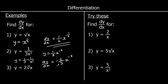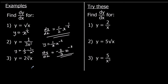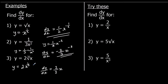For the third one, we've got two times the cube root of x. The cube root of x is the same as a power of one third, so we can say y equals two x to the power of one third. A power of a half is a square root; a power of a third is a cube root. Now we can differentiate: times by the power and take one off the power — one third times two is two thirds, and the power becomes one third take away one, which is negative two thirds.